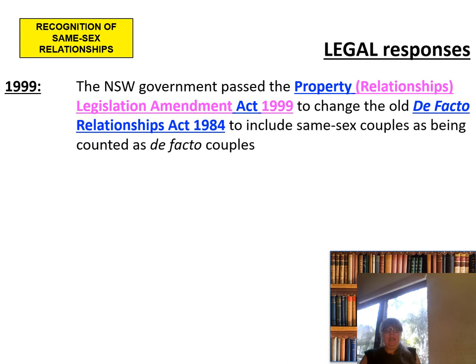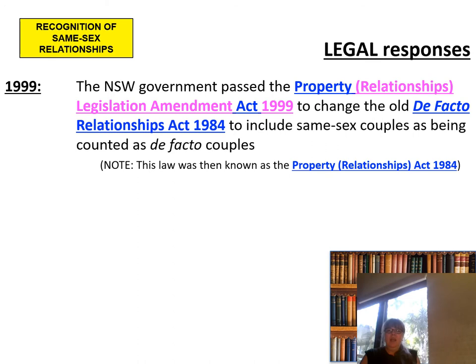In 1999, the New South Wales government passed the Property Relationships Legislation Amendment Act 1999 to change the old De Facto Relationship Act of 1984 to include same-sex couples as being counted as de facto couples for financial and property matters. This law was then known as the Property Relationships Act.